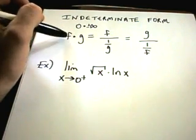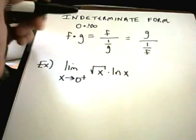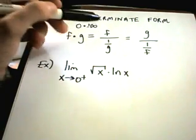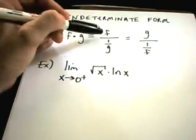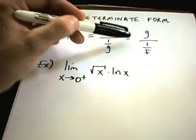And the idea is you have two functions, f of x times g of x. What we're going to do is basically make this into an indeterminate fraction by leaving one in the numerator and putting one over the other in the denominator.